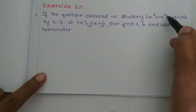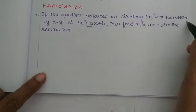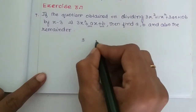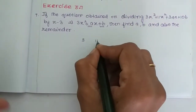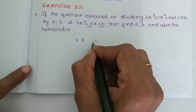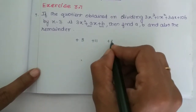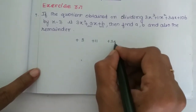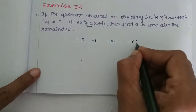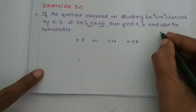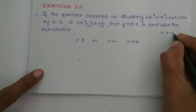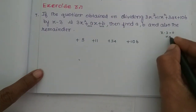Setting up the standard synthetic division format with x³, x², x, and constant terms. The coefficients are: 3, 11, 34, and 106. Since x minus 3 is the divisor, we set x minus 3 equal to 0, giving x equal to 3. So we use 3 in our synthetic division.